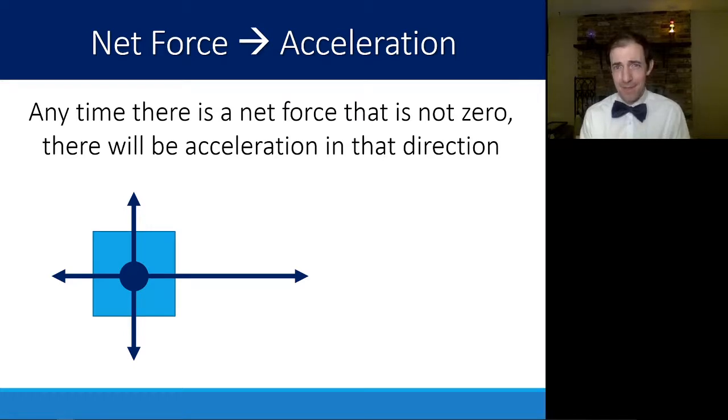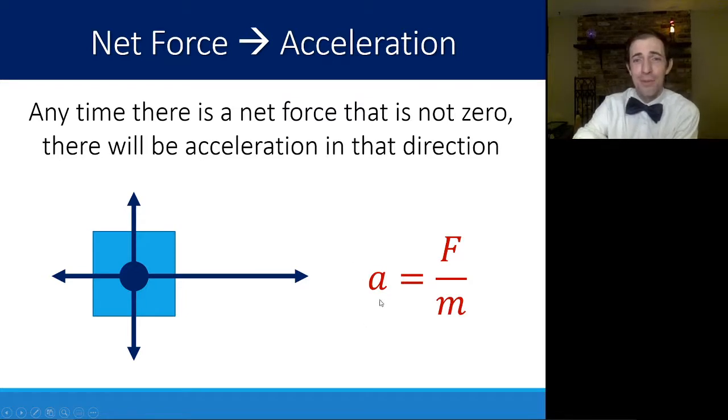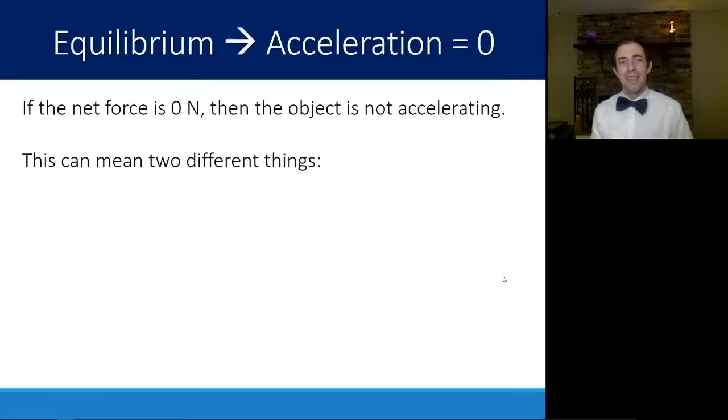So if we know that net force is related to acceleration, it means that any time that we have a net force that isn't zero, so the forces don't fully cancel, there will be acceleration. It doesn't mean that an object is moving. It means that an object's motion is changing. So not only is it moving down the road, it's getting faster or getting slower as it goes. And we can quantify that by saying a is equal to F divided by m. That's just a rearranging of F equals ma. Along the same lines, if an object is in equilibrium, so all the forces cancel out to give us a net force of zero, that means that acceleration is zero. It's just the only way that a can equal F over m. If F is zero, anything zero divided by mass is always going to give you zero.